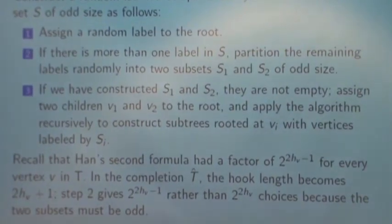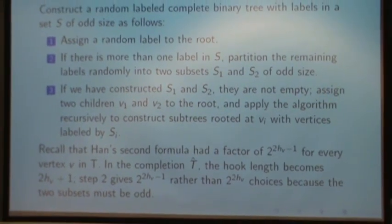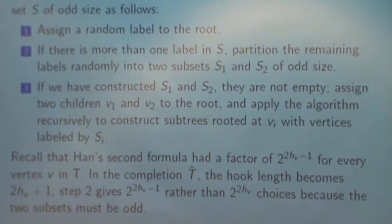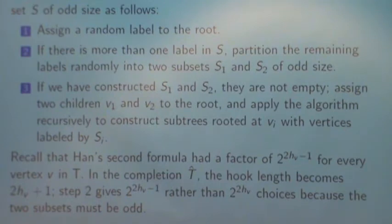So here's our first algorithm. This is almost the same as the algorithm except that we're going to keep the tree complete. Construct a random labeled complete binary tree with labels in a set of odd size. A binary tree is complete if every subtree has an odd number of vertices. So assign a random label to the root. And if there's more than one label in the set, partition the remaining labels randomly into two subsets, S1 and S2, of odd size.